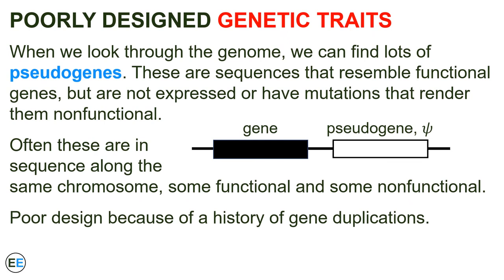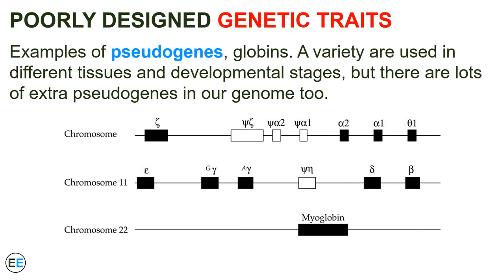In addition to the visible structures of our anatomy, when we look through the genome, we can find evidence of vestigial genes called pseudogenes. These are sequences that resemble functional genes but are not expressed, or have mutations that render them nonfunctional. Often these pseudogenes are in sequence along the same chromosome with other functional genes. These extra, almost-genes are in the genome because of a history of gene duplications — one continued to function, while the other acquired a mutation rendering it nonfunctional. For example, if we look at the various globin genes, we can see a variety of functional genes and leftover, nonfunctional pseudogenes.